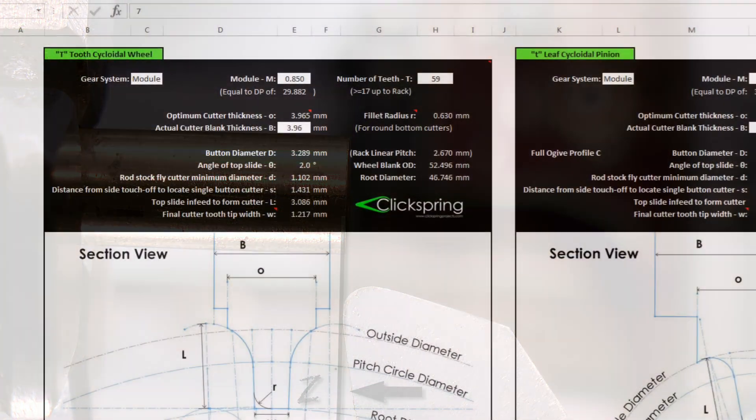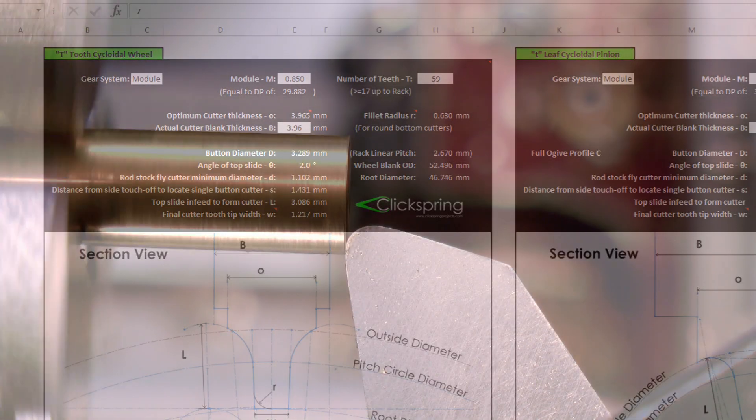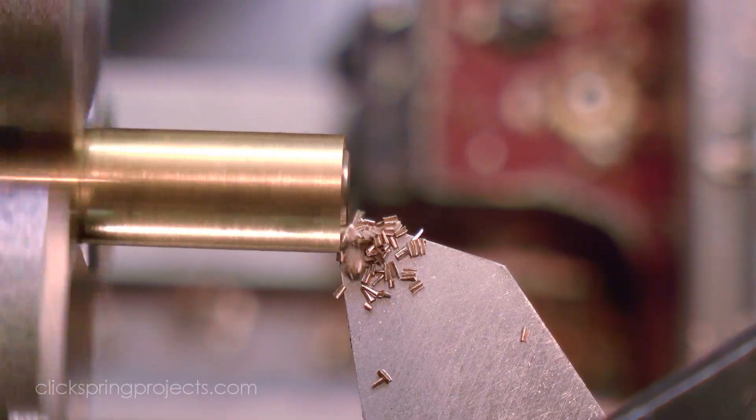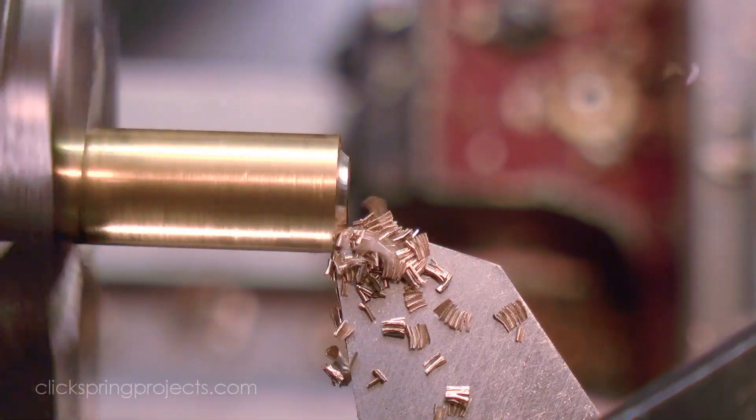Then a simple facing cut positions the form tool in the Z axis. The top slide infeed figure L is retrieved from the calculator, and then I feed in the cross slide towards the zero position that was set a moment ago, making the cut by feeding in with the top slide, using that infeed figure L.